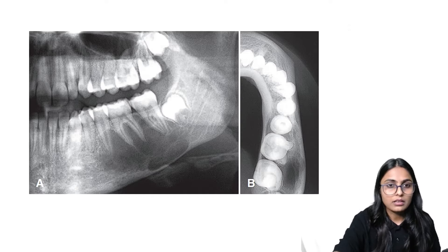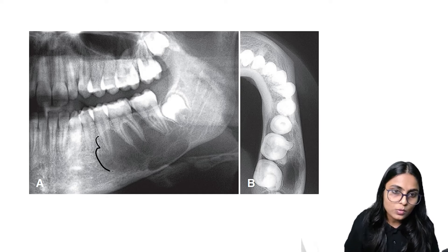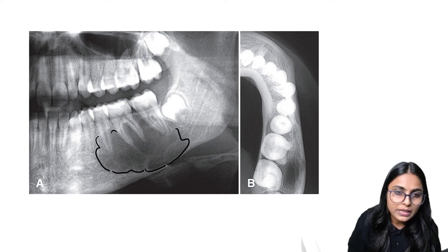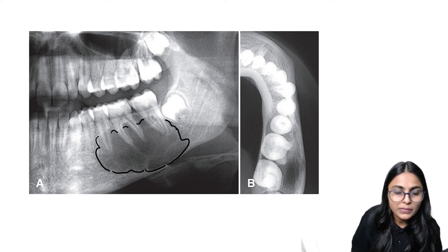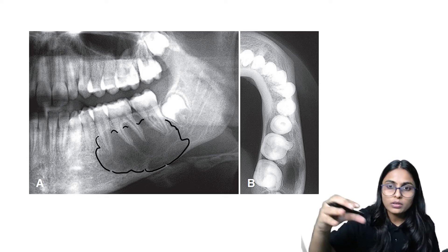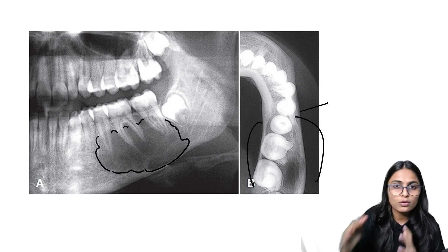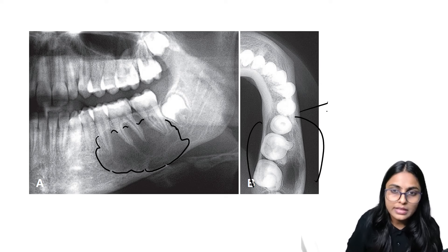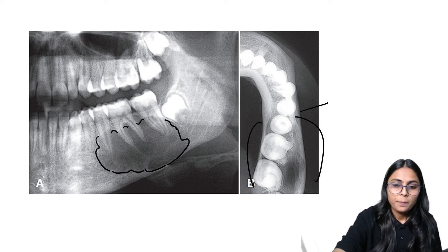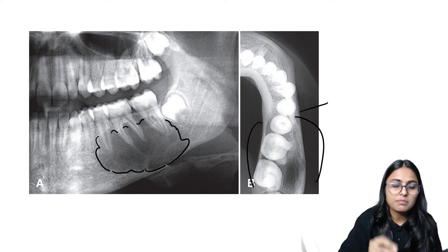A radiograph is shown demonstrating traumatic bone cyst with scalloping in between the interradicular portions of teeth, grown along the bone with no expansion. Occlusal and lateral occlusal radiographs confirm no expansion of buccal or lingual cortical plates. When you see such lesions, the differential diagnosis includes OKC and TBC.